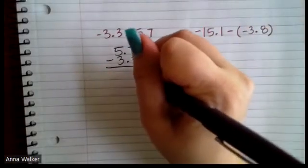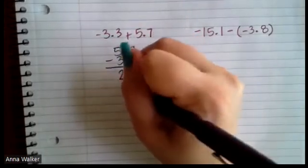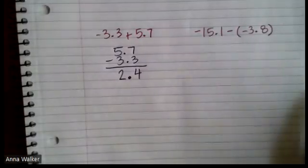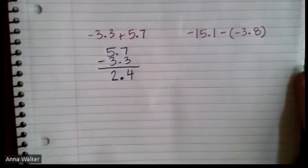So 7 minus 3 is 4. Five minus 3 is 2. So the answer to this is going to be positive 2.4. We're going to end up back in the positives. So let's look at another example.